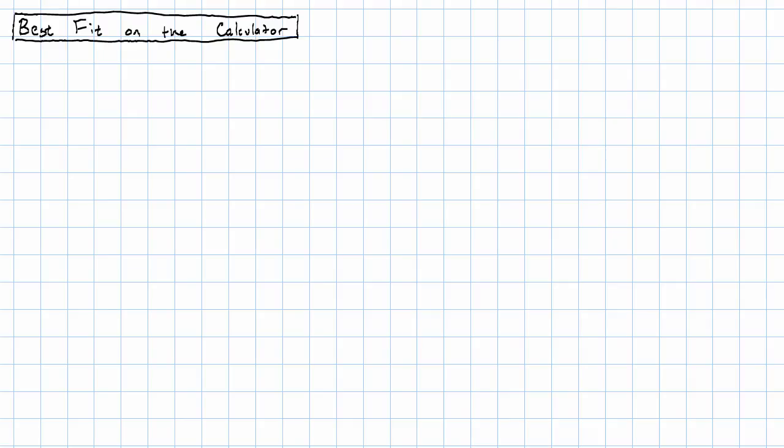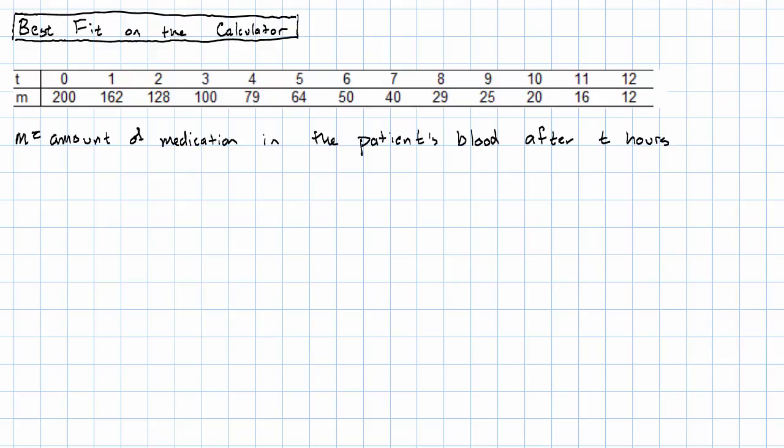In the last video, we saw the following values which are approximately exponentially related. We had this table showing T and M, where M is the amount of medication in a patient's blood after T hours.